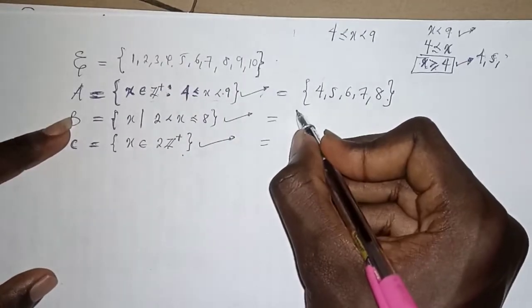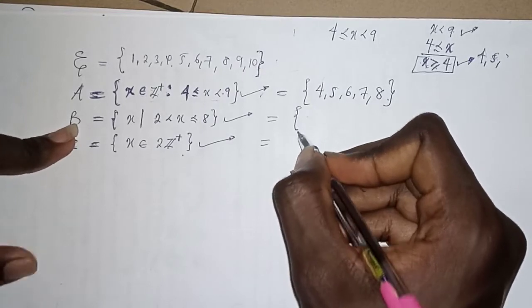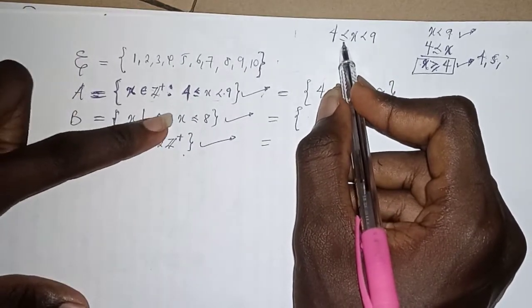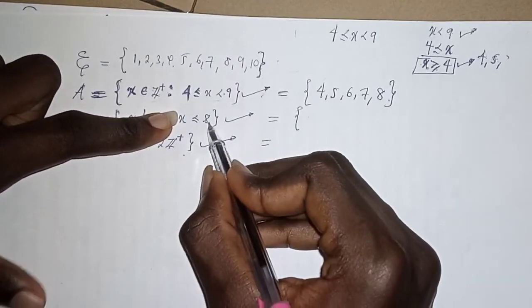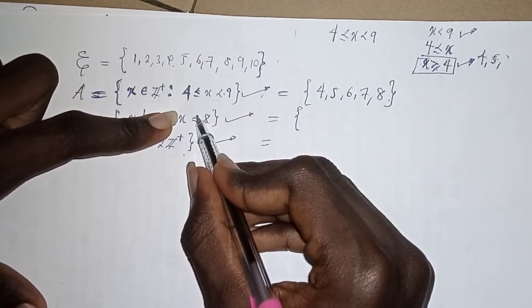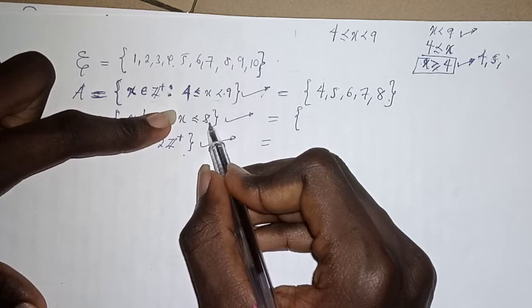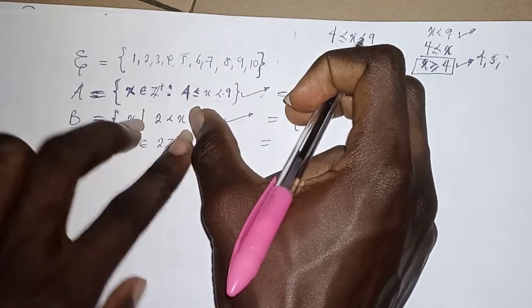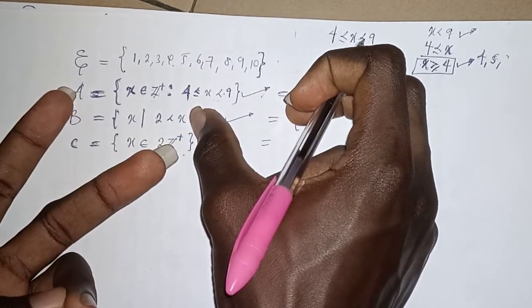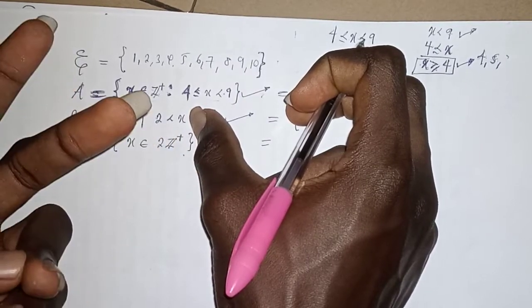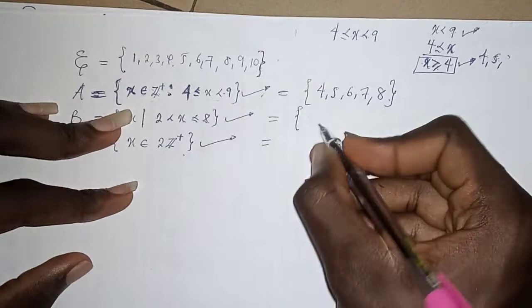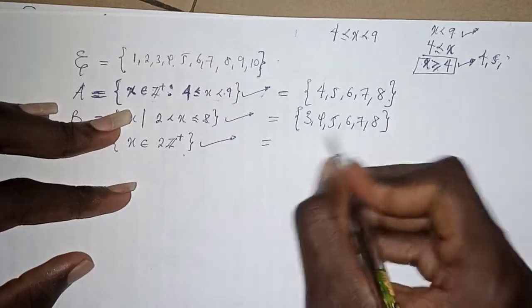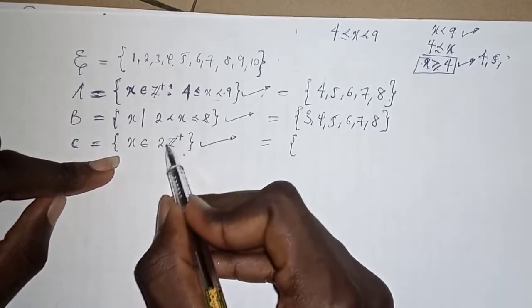For set B, we have two is less than X and X is less than or equal to eight. Covering the right side, eight is included and numbers below it down to three. Turning the left part anti-clockwise gives X is greater than two, so we start from three. Therefore set B = {3, 4, 5, 6, 7, 8}.